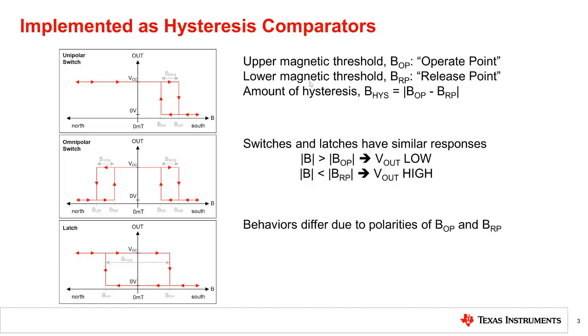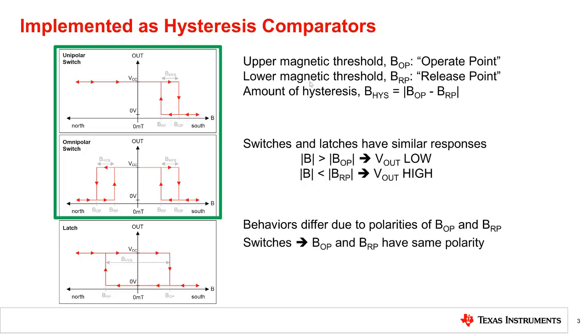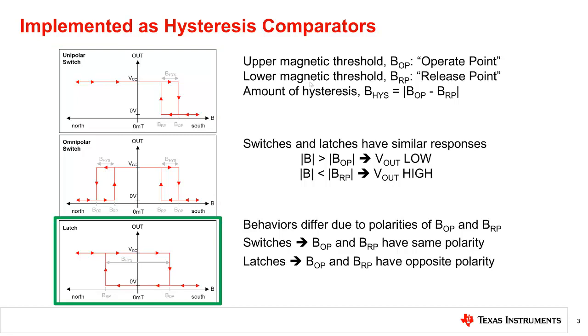The difference in behavior between switches and latches is due to the polarity of their magnetic thresholds. Switches have B-op and BRP of the same polarity to be able to detect changes in B-field amplitude, even if polarity remains the same. On the other hand, latches have B-op and BRP of opposite polarity to be able to detect changes in B-field polarity, as long as the B-field amplitude is large enough.